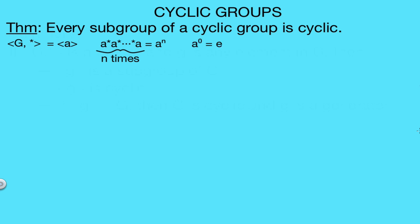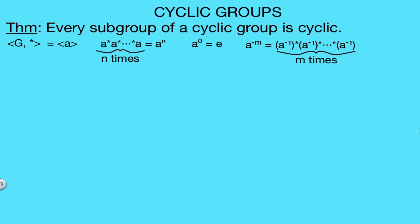Also, a to the 0 will represent the identity element for our group, which we'll call e. And if we have a to the negative m, this means that we're repeatedly applying the binary operation star to a inverse m times. Using this new notation saves a lot of space, it's easier to write, and we can use multiplicative properties. So it's definitely more convenient, and I'll be using this notation for the proof.